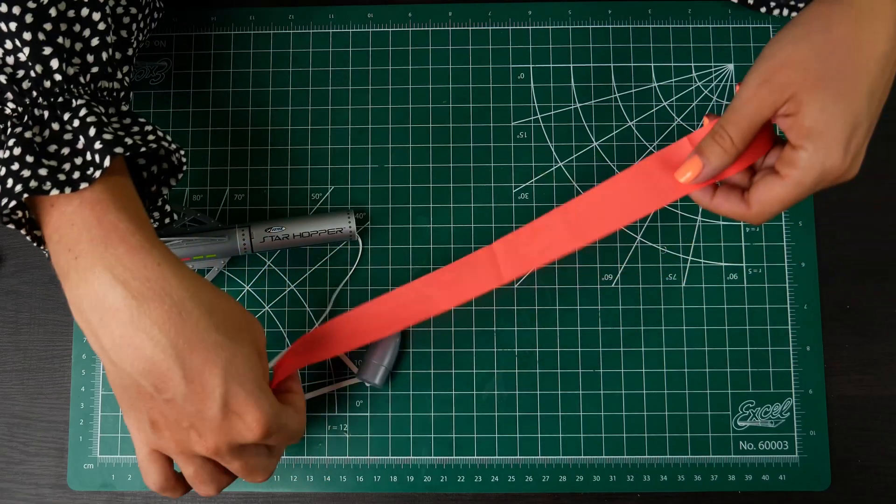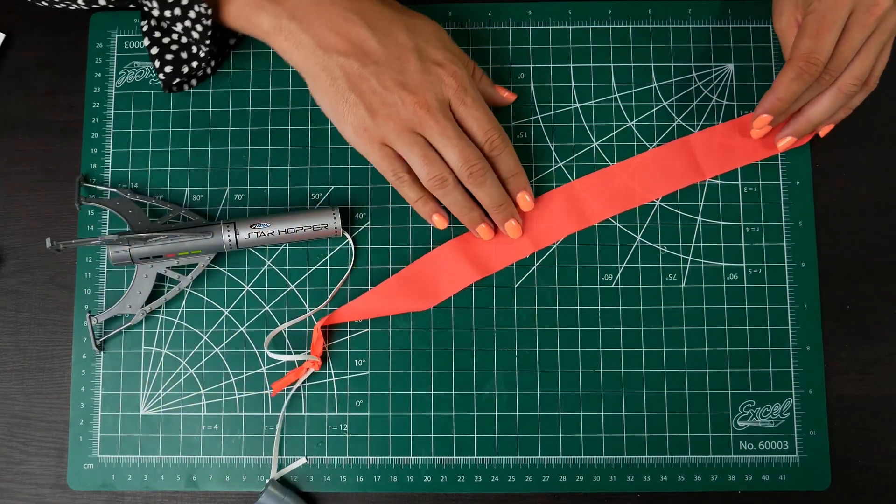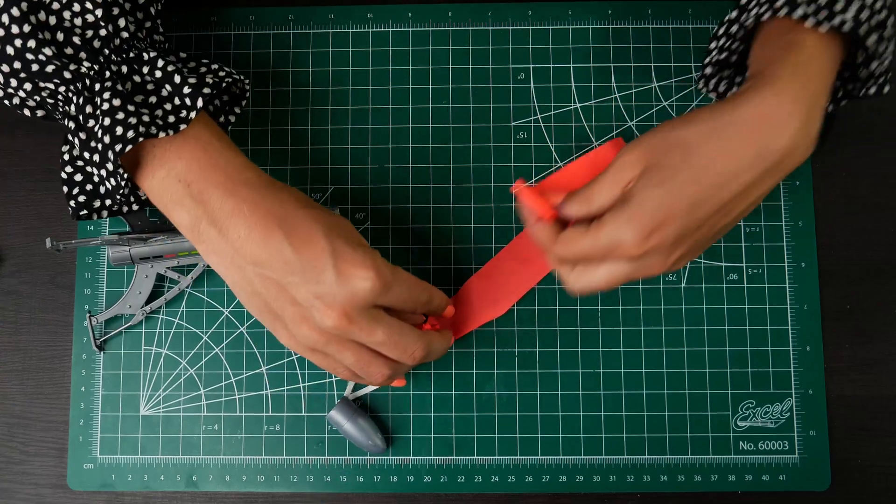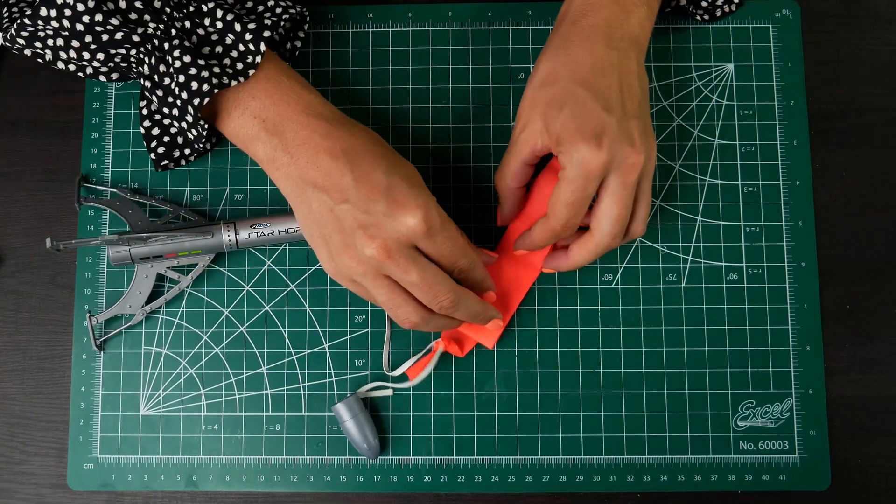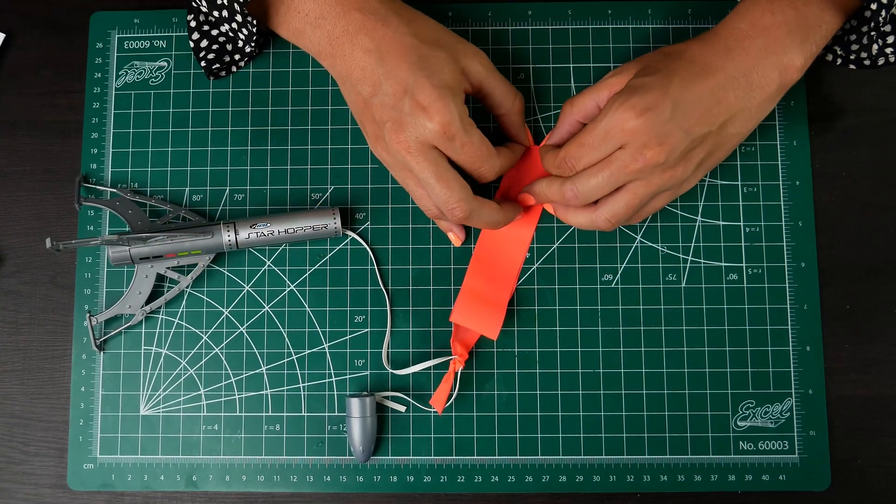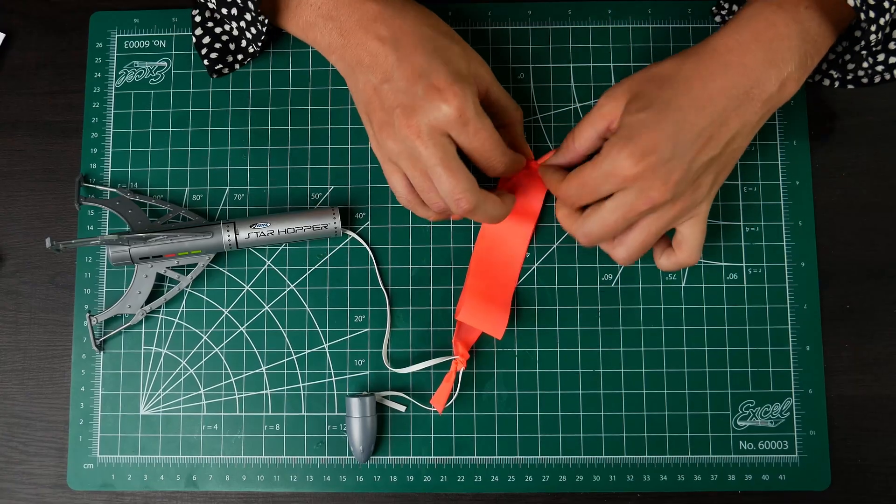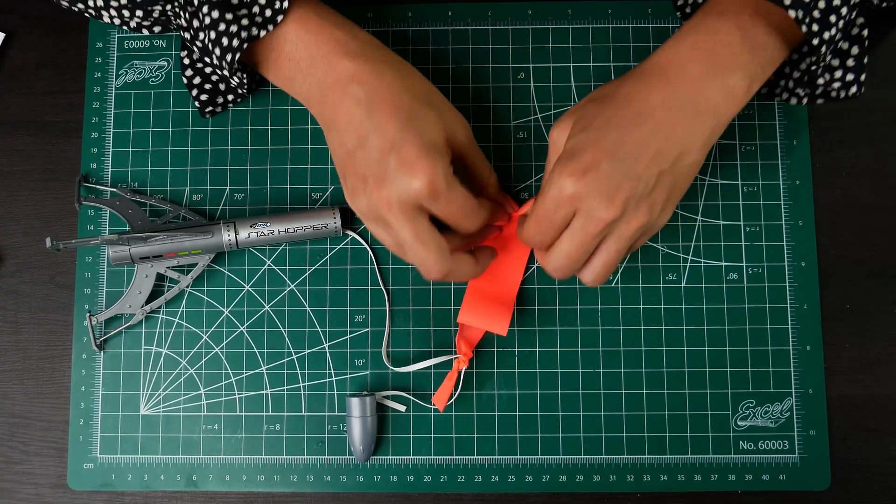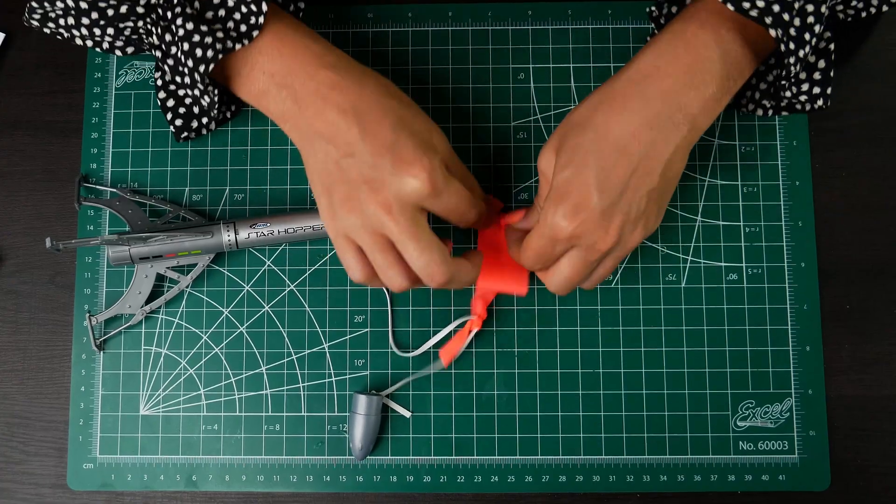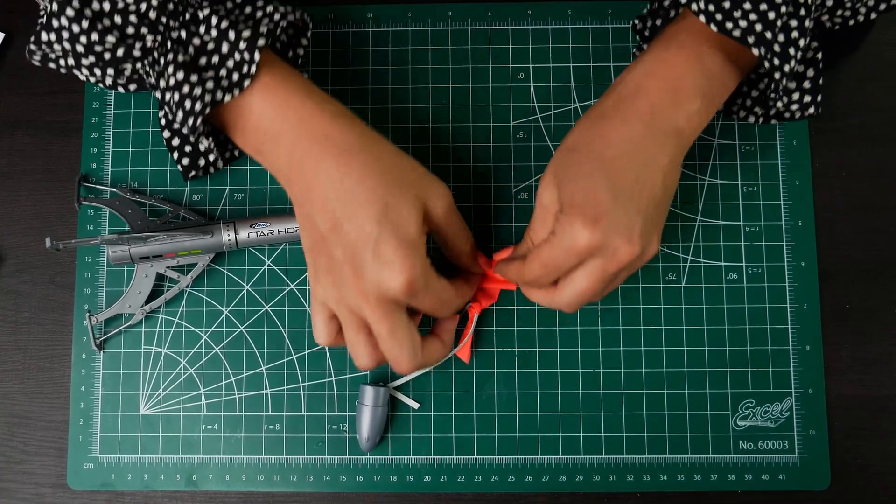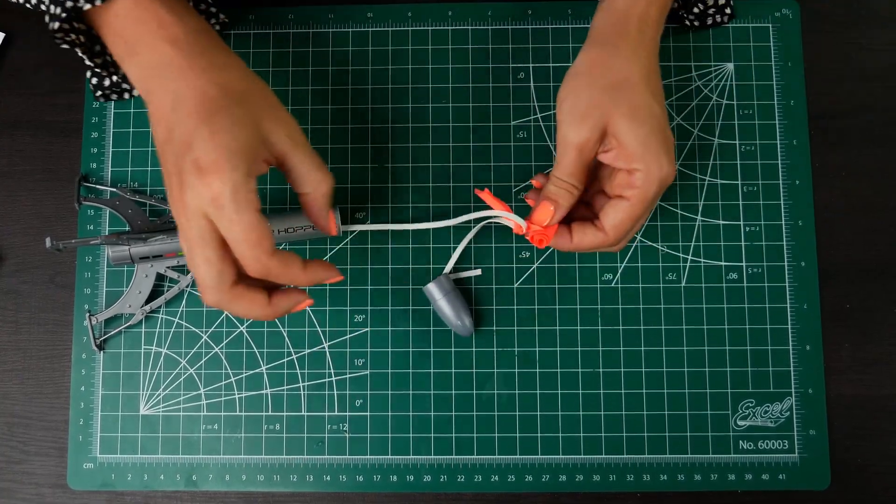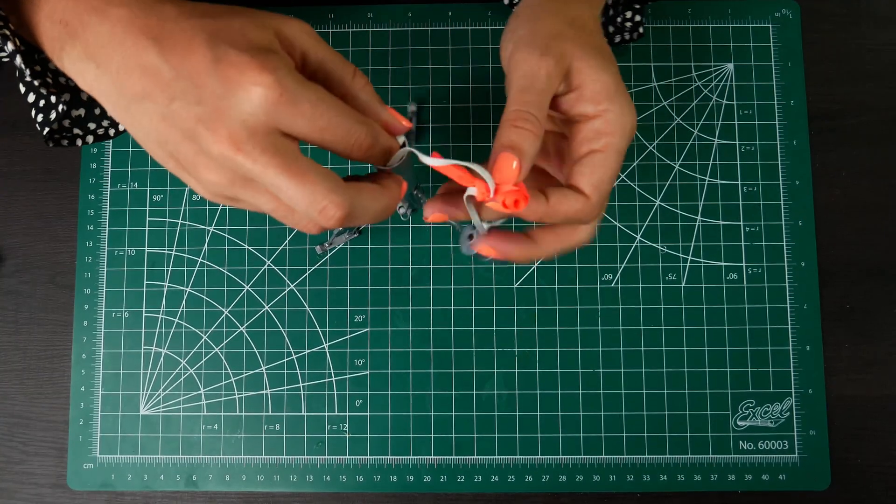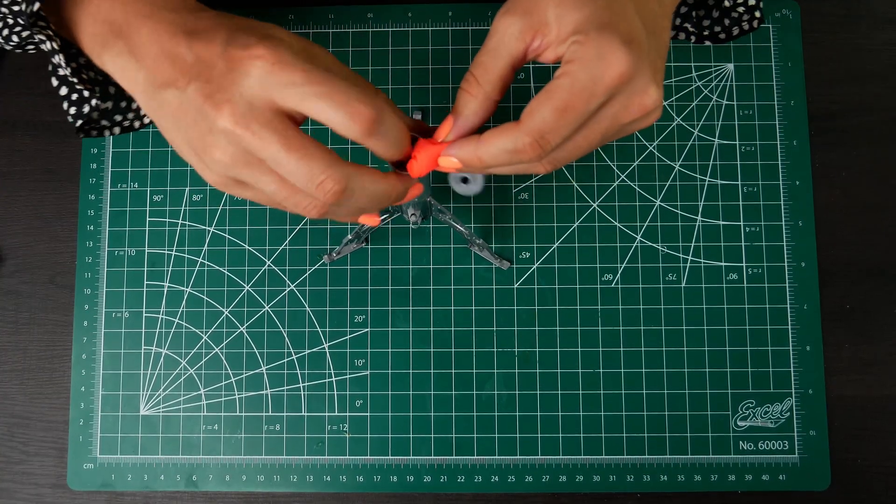Then you're going to fold the streamer and you can fold it in. I like to fold it in thirds. And then roll it and it helps to roll this pretty tightly because you want to make sure that it is small enough to fit easily inside the body tube. You don't want it to be too tight in there.